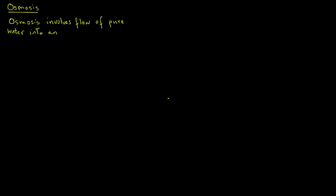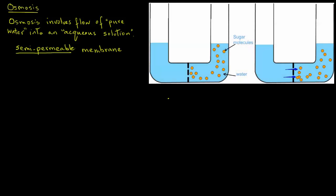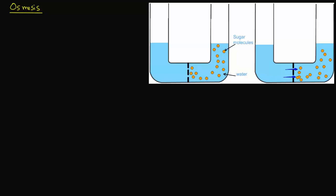Now let's look at the process of osmosis. In the case of osmosis, there is a flow of pure water into an aqueous solution — that is, a solution that contains water. This flow occurs through a semi-permeable membrane. We again have the same U-shaped apparatus, except now the membrane is a semi-permeable membrane, with water on both sides of the column.